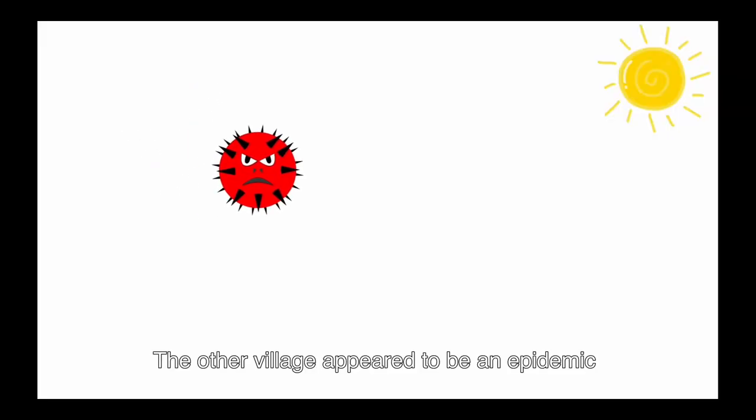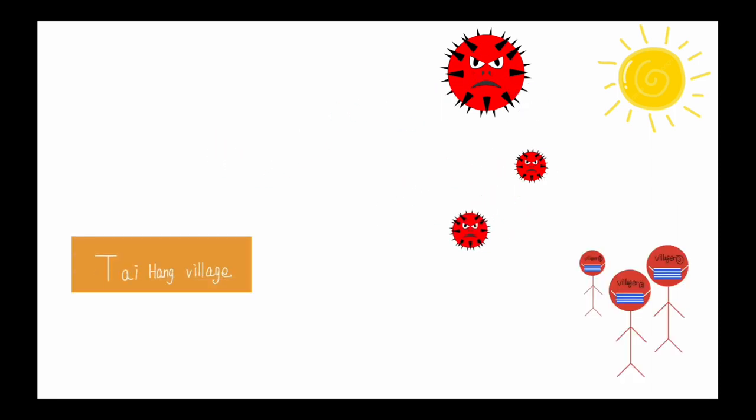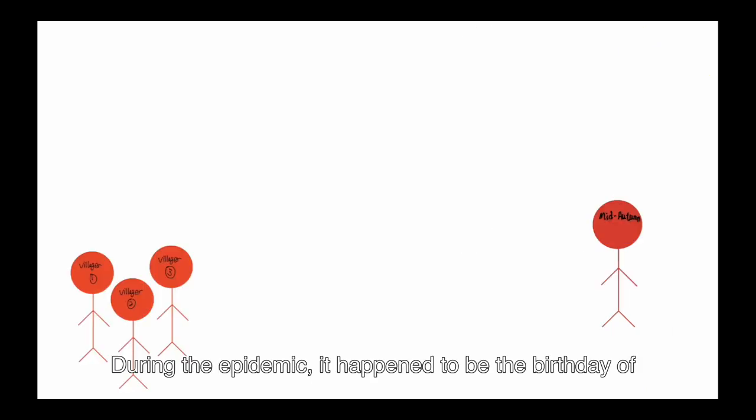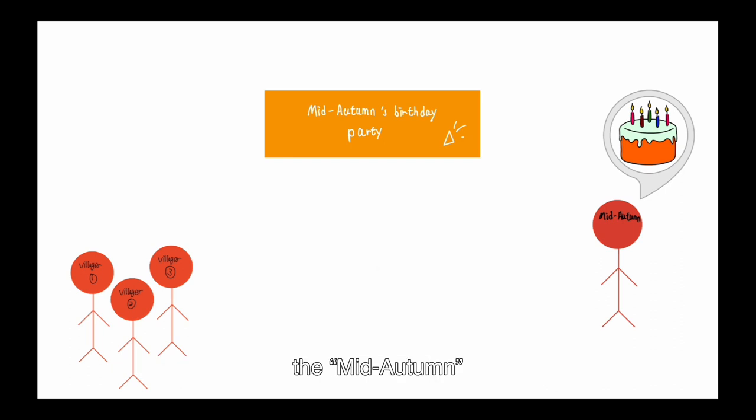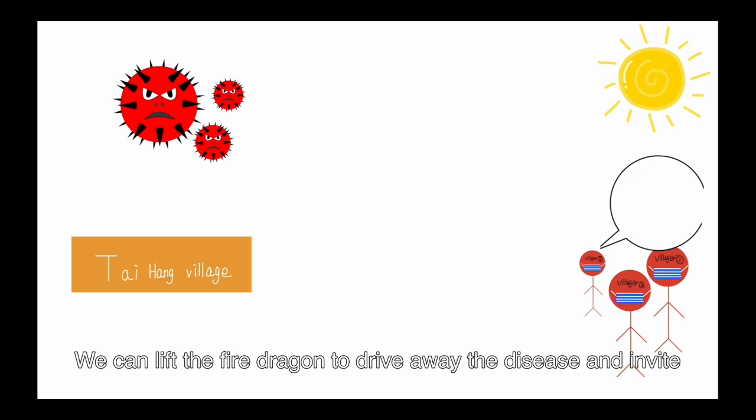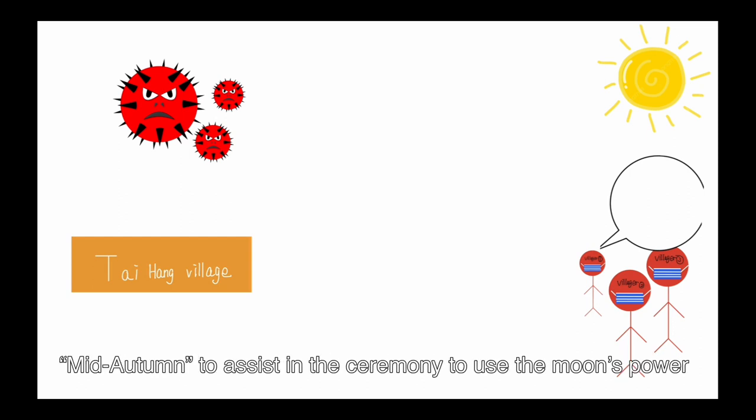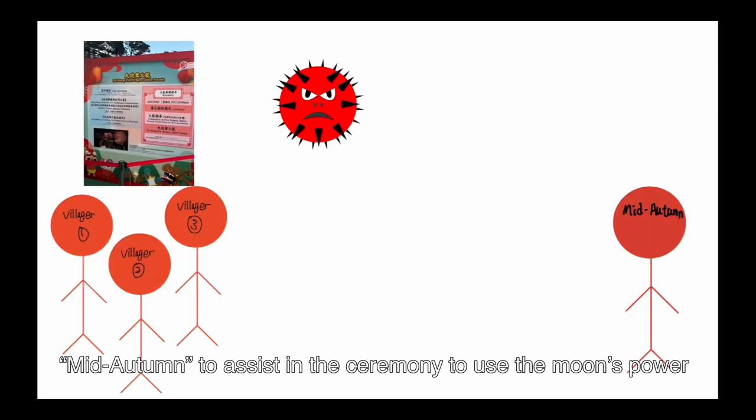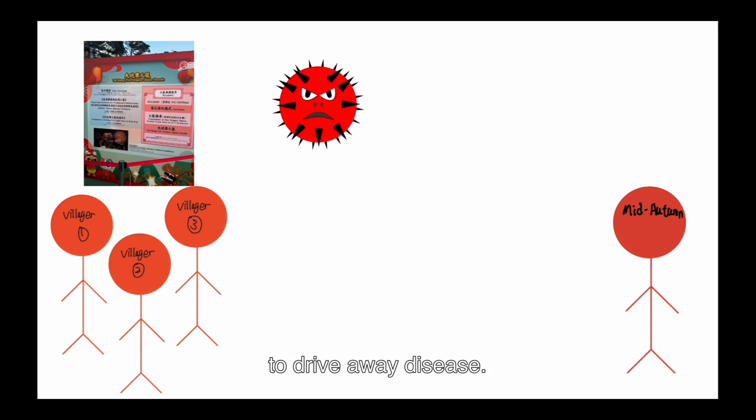Other villages appear to be an epidemic, making the villages feel unsafe. During the epidemic, it has been to be the birthday of the Mid-Autumn. Some religious suggest we can lift the fire dragon to drive away the disease and invite the Mid-Autumn to assist in the ceremony to use the moon's power to drive away disease.